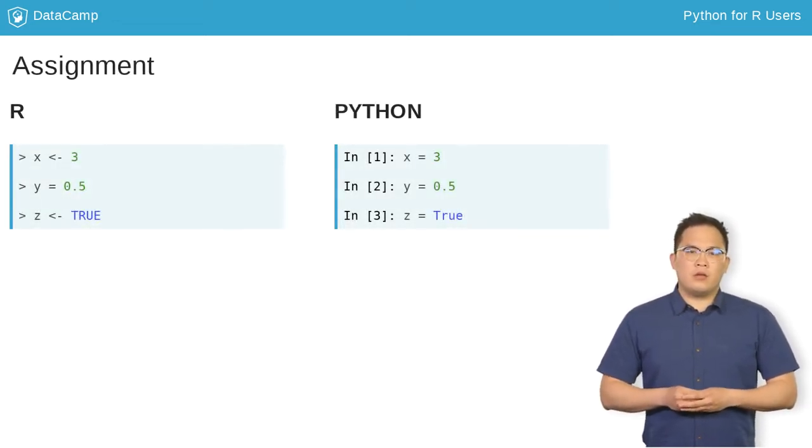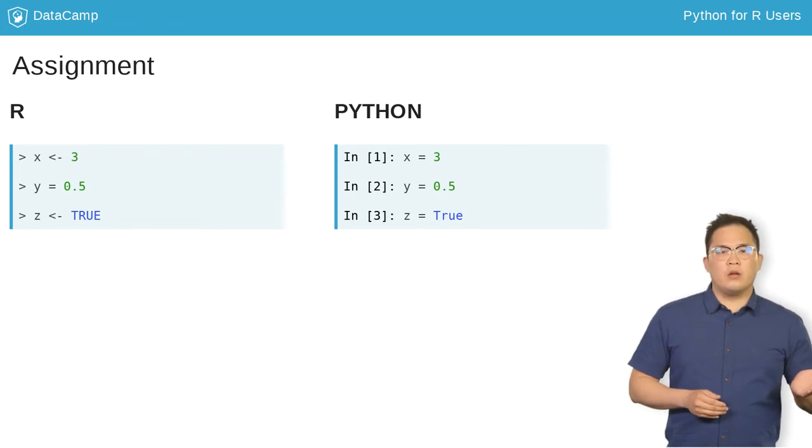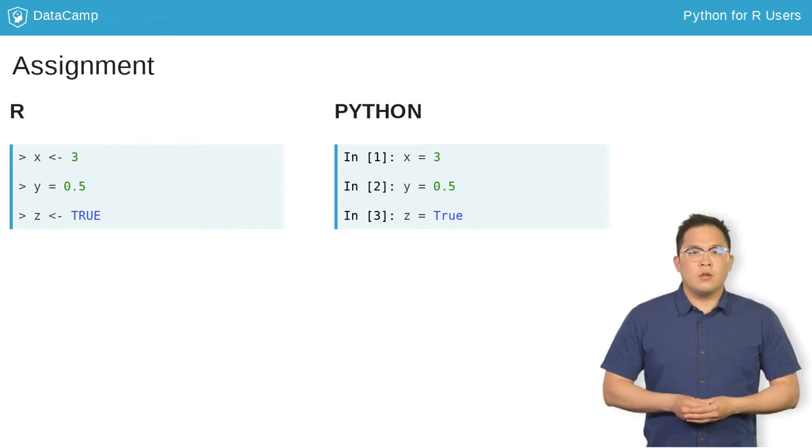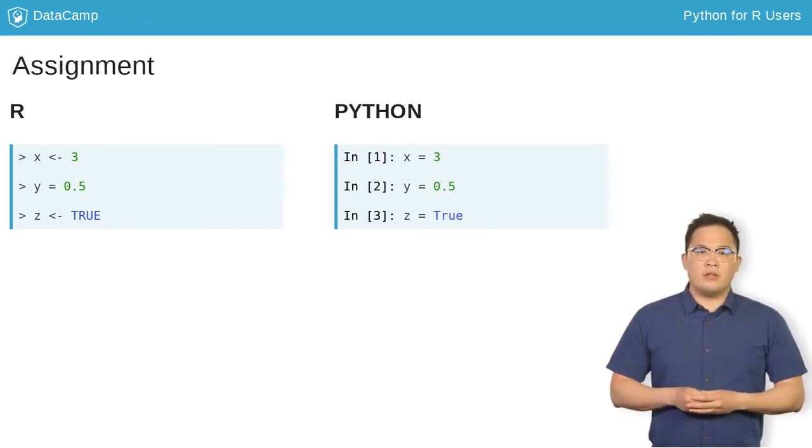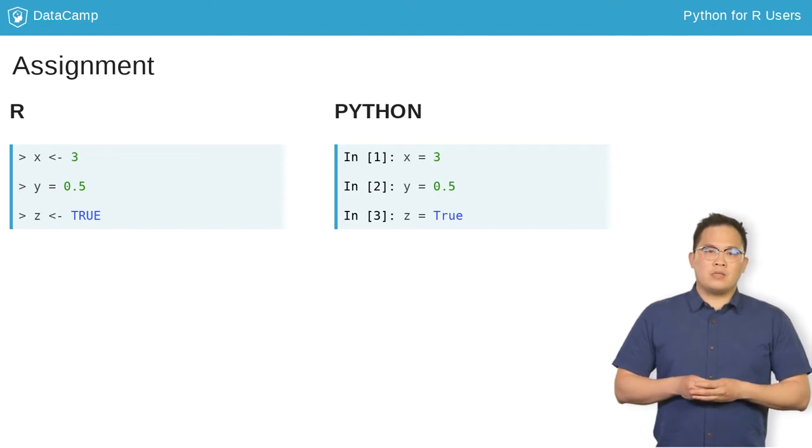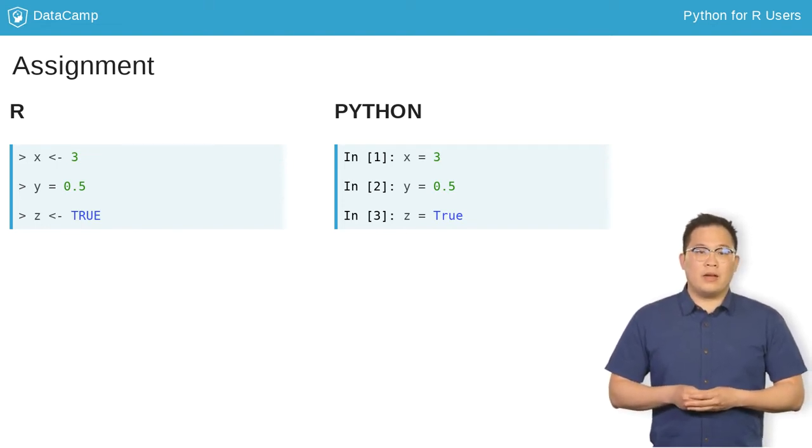Just like in R, the values on the right-hand side of the equal sign are assigned to the variable specified to the left of the equal sign. You do not need to declare them in advance or specify a type. Although, unlike R, the equal sign is the only way to assign values to variables.